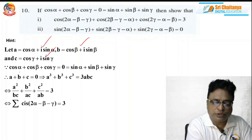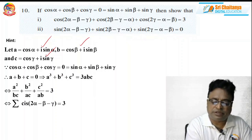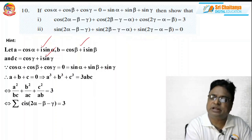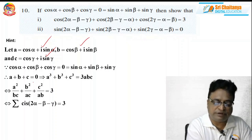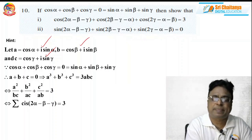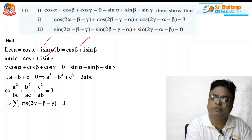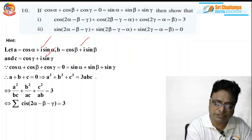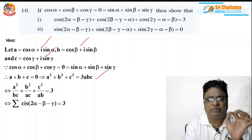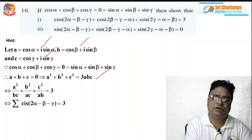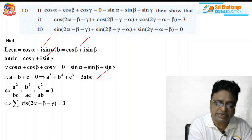Since cos α + cos β + cos γ = 0 and sin α + sin β + sin γ = 0, therefore A + B + C = 0. Whenever A + B + C = 0, automatically A³ + B³ + C³ = 3ABC. Several times I have mentioned this point. Now what I am doing is dividing and working with 3ABC.